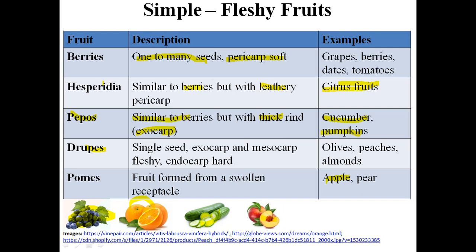In drupes, the fruit contains a single seed. Both the exocarp and mesocarp are fleshy, while the endocarp is hard. Examples are olive, peaches, and almonds.